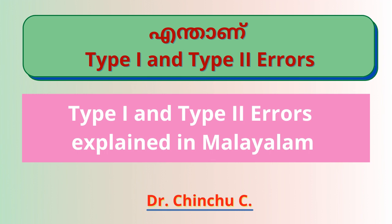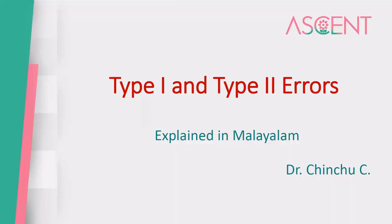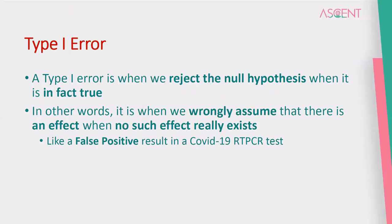Hello everyone, I am going to talk about the topic of Type 1 and Type 2 error in this video. Type 1 error is when we reject a null hypothesis when it is in fact true.